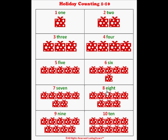Let's count the presents: one, two, three, four, five, six, seven, eight. Here's the number nine. Here's the word nine. Spell the word nine with me: N-I-N-E. Let's count the presents: one, two.